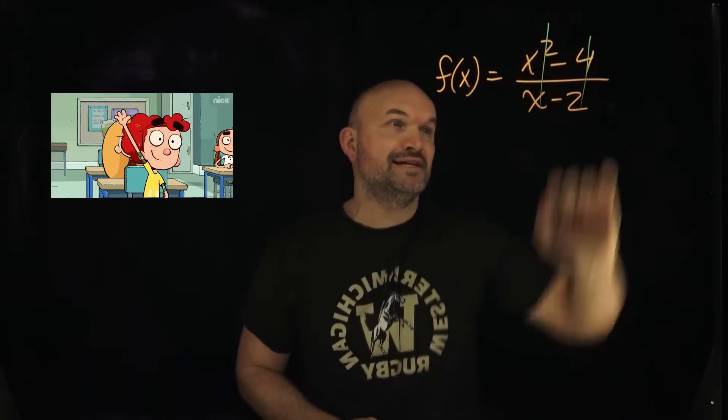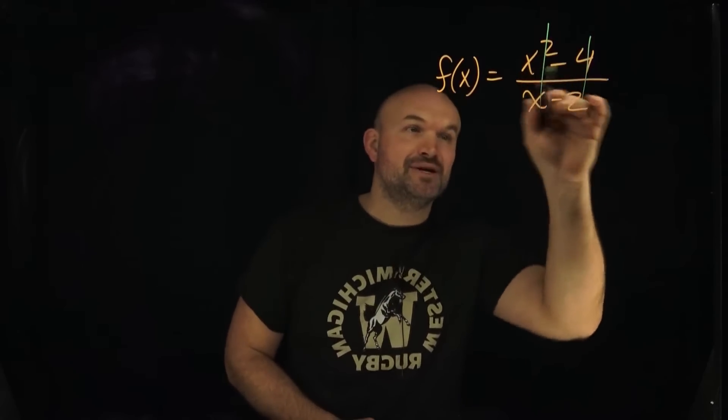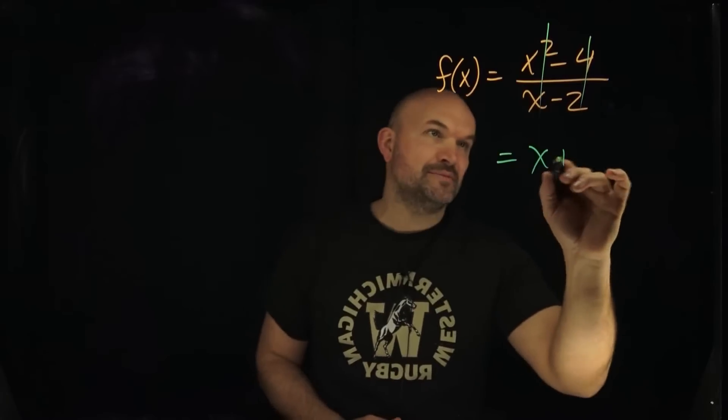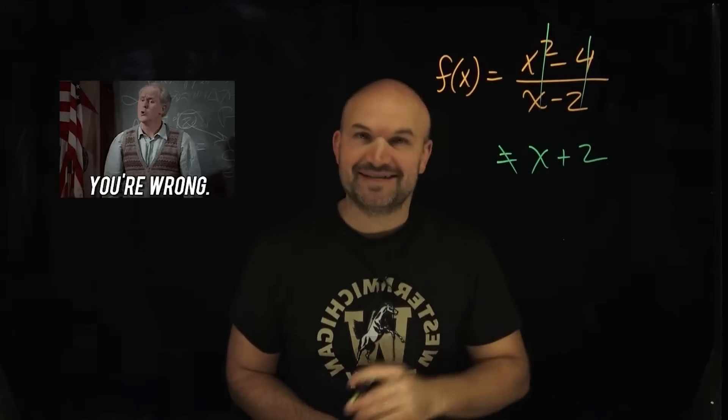A lot of times students will go like, oh, these things divided out to like x squared divided by x is going to equal an x and negative 4 divided by negative 2 is going to be a positive 2. No, that is not correct.